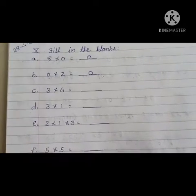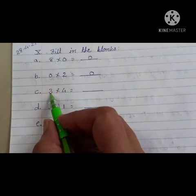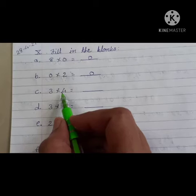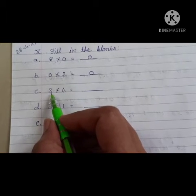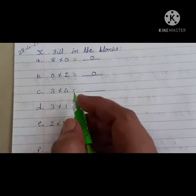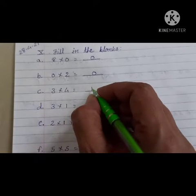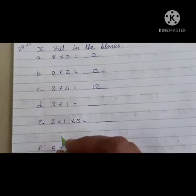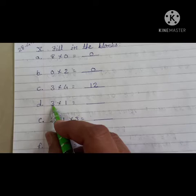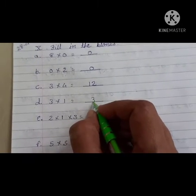Next, C, 3 multiply 4. Dodging table, 3 4 जा, 12. Next, D, 3 जा, 3.